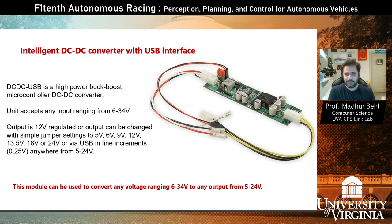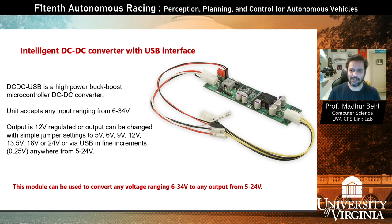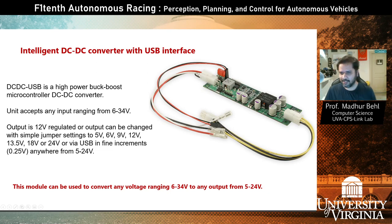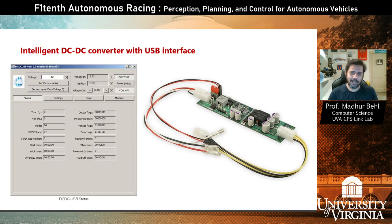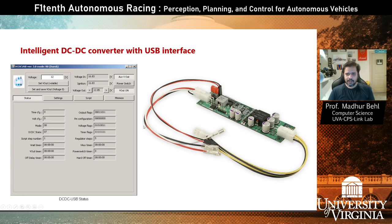We have a LiPo battery that powers all the peripherals, but we need a way to regulate the voltage sent to the Jetson and other peripherals. To do so, we have a clever device: an automotive-grade DC-DC converter with a software interface to program the output voltage. It has an input port and output port. You connect it to a software tool and program what voltage should appear at the output — for example, inputting a 24-volt LiPo battery but configuring the output to be a steady 12 volts. It's a pretty nifty piece of hardware to make sure all devices are powered correctly.